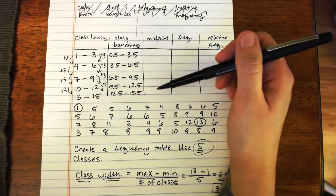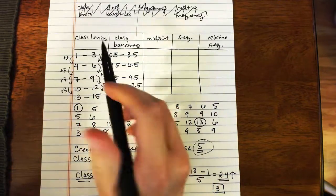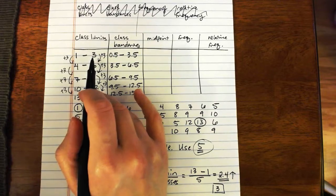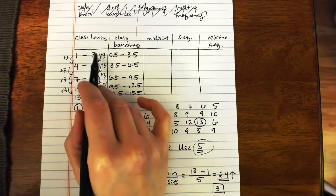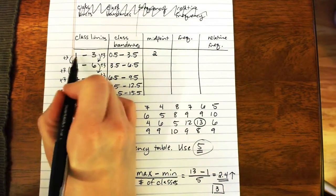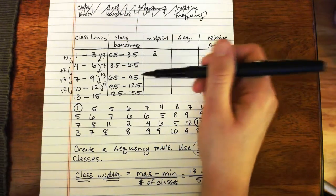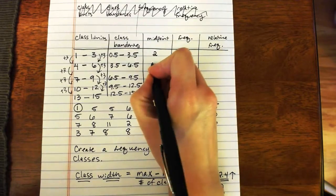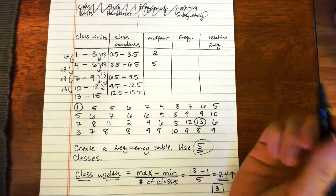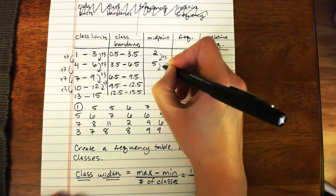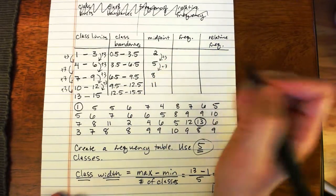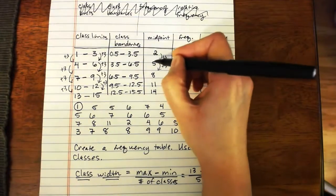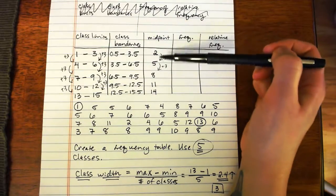Midpoint is exactly what it sounds like — the halfway point between your class limits or class boundaries. To find the midpoint for the first class, add the two class limits and divide by 2: 1 plus 3 equals 4, divided by 2 is 2. You can see that 2 is halfway between 1 and 3. The remaining midpoints follow the plus-3 pattern: 2, 5, 8, 11, and 14 — all because our class width is 3.